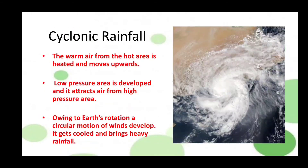The next type is cyclonic rainfall. Rainfall that occurs through cyclones or storms is called cyclonic rainfall. When warm air from a hot region gets heated, the air moves upwards, developing low pressure in that region. This low pressure attracts air from high pressure areas. Due to the pressure difference and the earth's rotation, a circular motion of wind develops, called a cyclone. It gets cool and brings heavy rainfall.